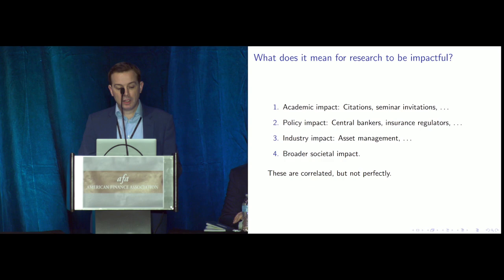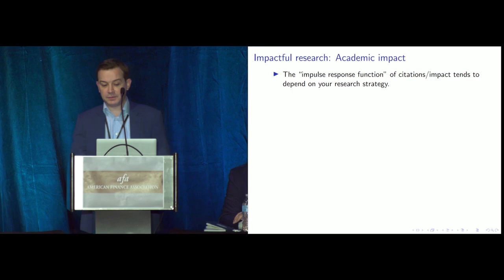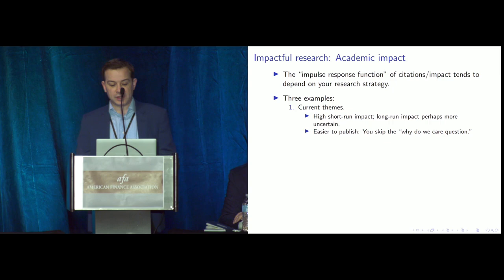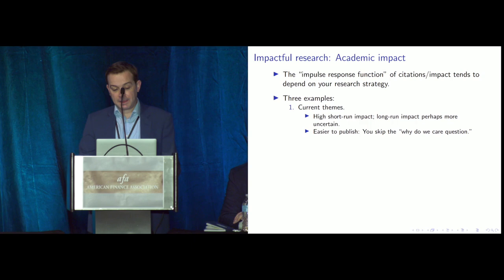On academic impact specifically, I think there are different impulse response functions depending on your research strategy. Working on current themes — COVID, ESG investing, machine learning and asset pricing — tends to have high short-run impact because lots of people are working on it. It's also easier to publish because you skip the 'why do we care' question. But the long-run impact may be more uncertain. For long-standing questions like market volatility or return predictability, publishing is more challenging but the long-run impact tends to be steadier.